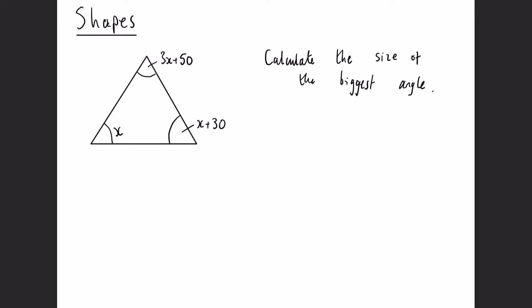Again, what do we know about the angles within a triangle? We know that they add up to 180. So again, we can say x plus x plus 30 plus 3x plus 50. So I've taken all three angles and we know that they must add up to 180 degrees.